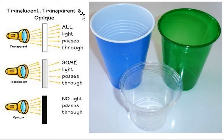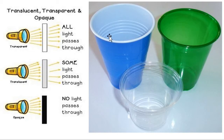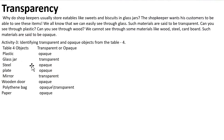Now let's look at transparency. There are three categories: translucent, transparent, and opaque. To find out which an object is, take three glasses and shine a torch on them. If all the light passes through, it is transparent. If only a certain amount of light passes through, it is translucent. If no light passes through, it is opaque.